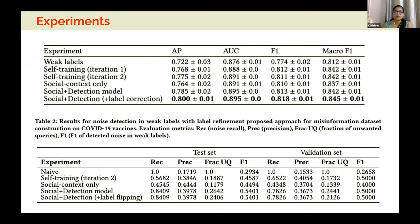With only the initial weak labels, we achieved an average precision of 0.72. Refining with just the entropy signal from the misinformation detection model improved performance on the validation/test set. Using social context alone also improved over weak labels. Combining both signals with label flipping based on model confidence boosted accuracy substantially. We also evaluated noise recall, finding that using both social context and the detection model together achieved 84% recall of noise in the initial weak labels, with reasonable precision and fewer wasted queries.